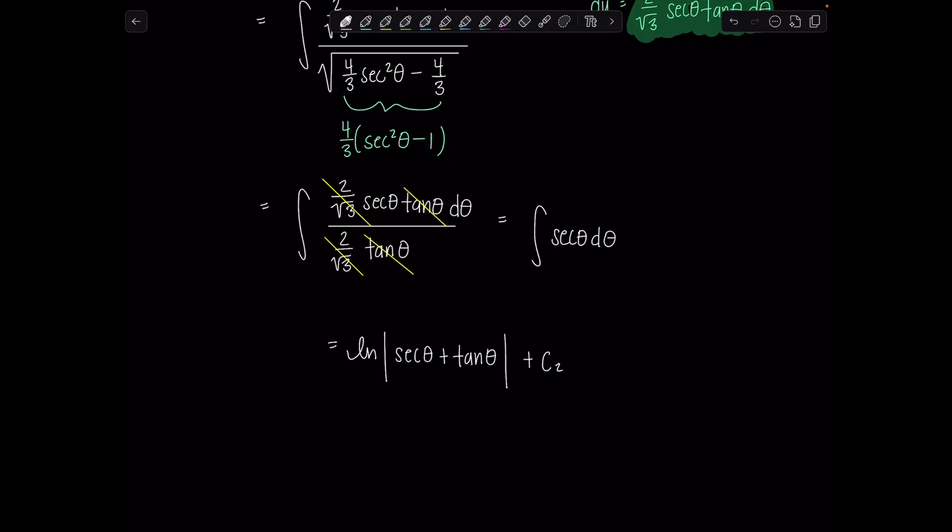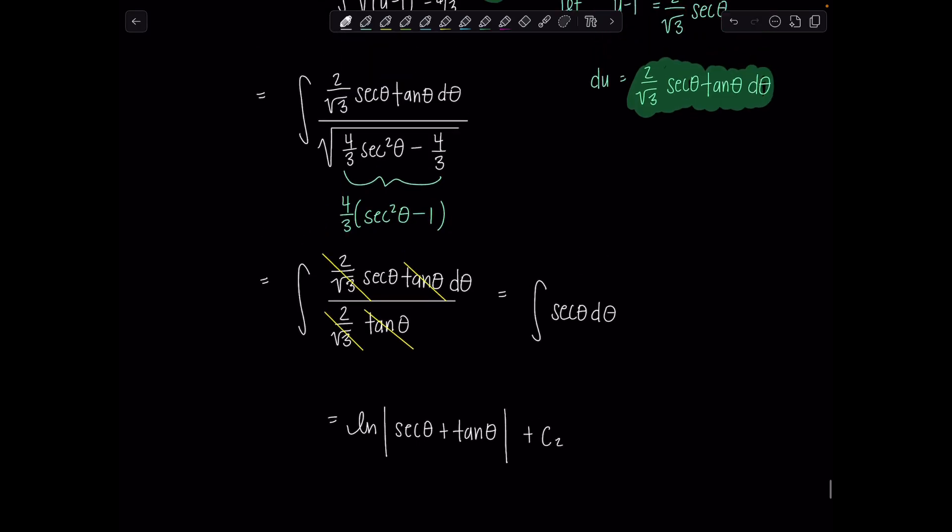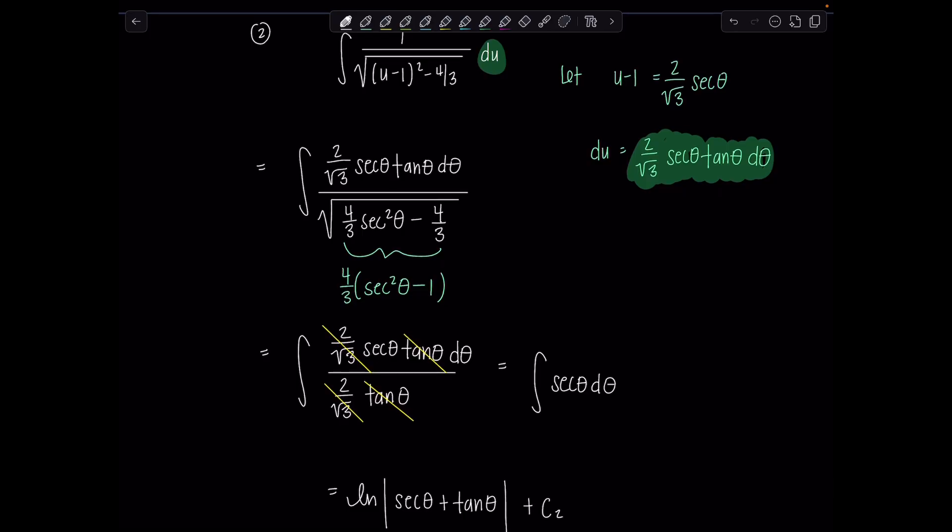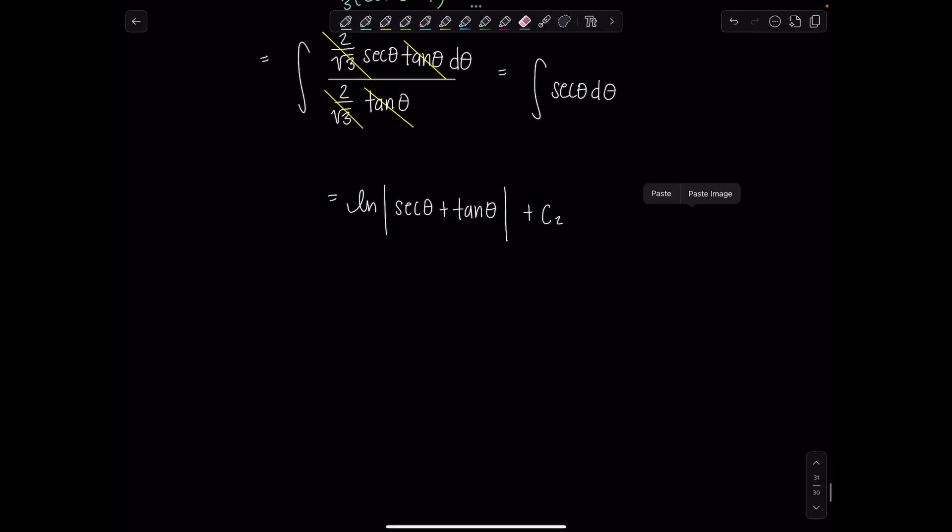And then now to get out of theta land and to go back to u, we need to draw a triangle. So look over here, there was my substitution. We let u minus 1 equal 2 over rad 3 secant theta. So rad 3 times u minus 1 over 2 is secant theta. And then here's my triangle.